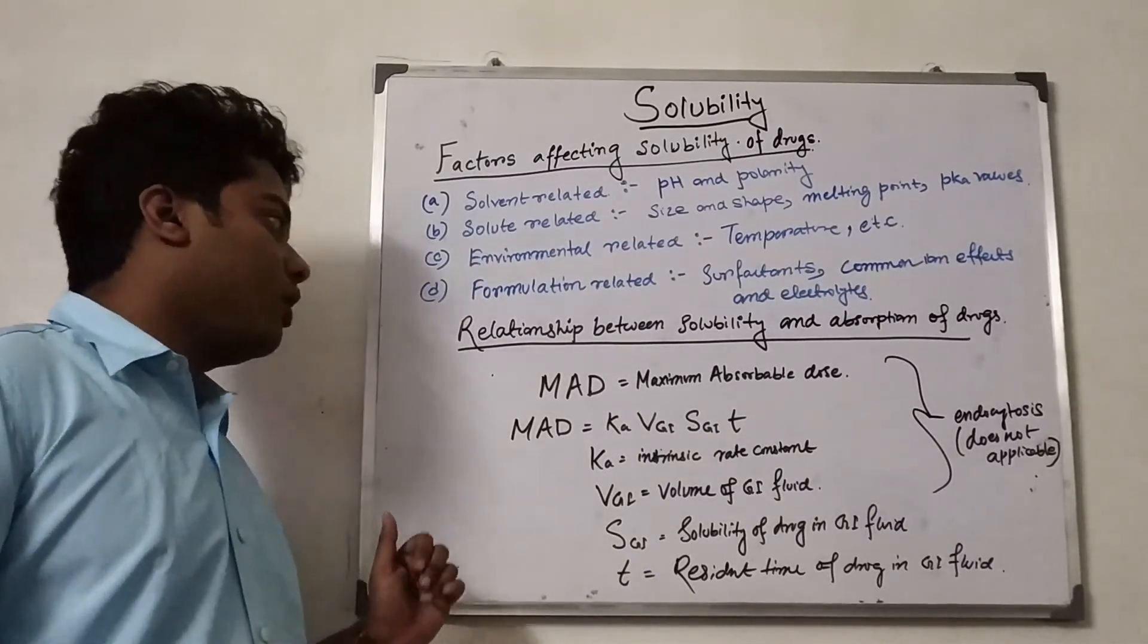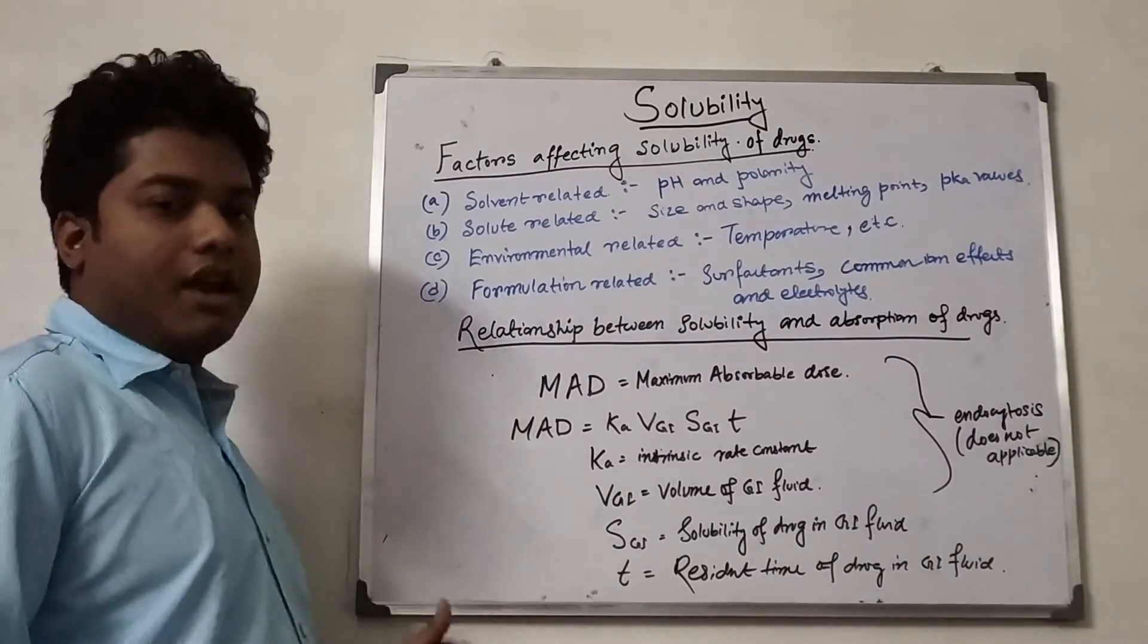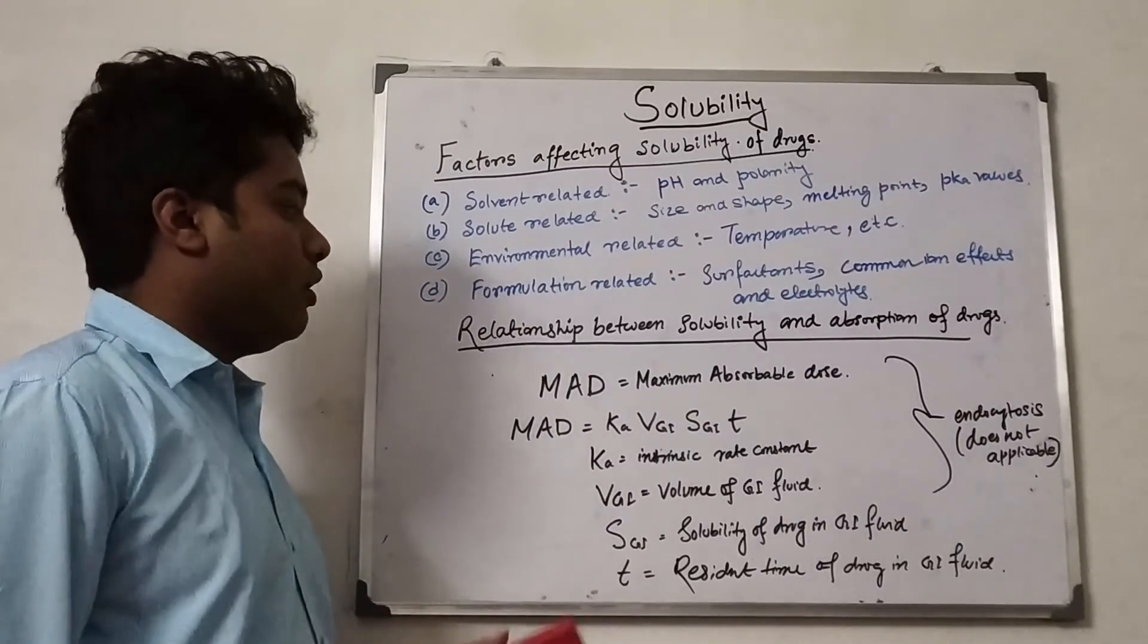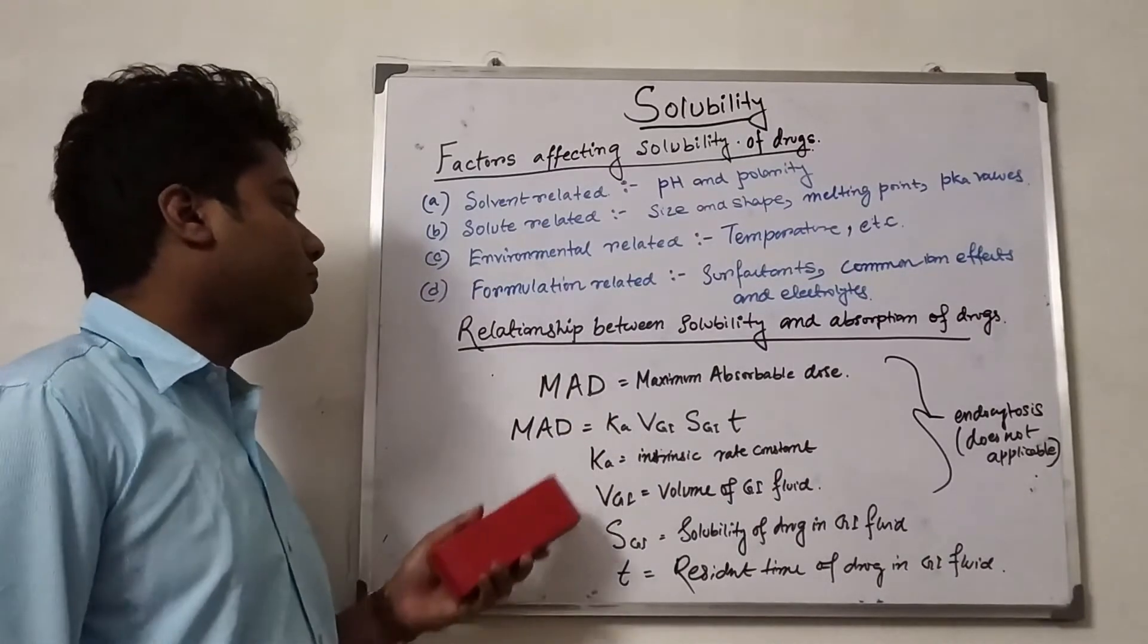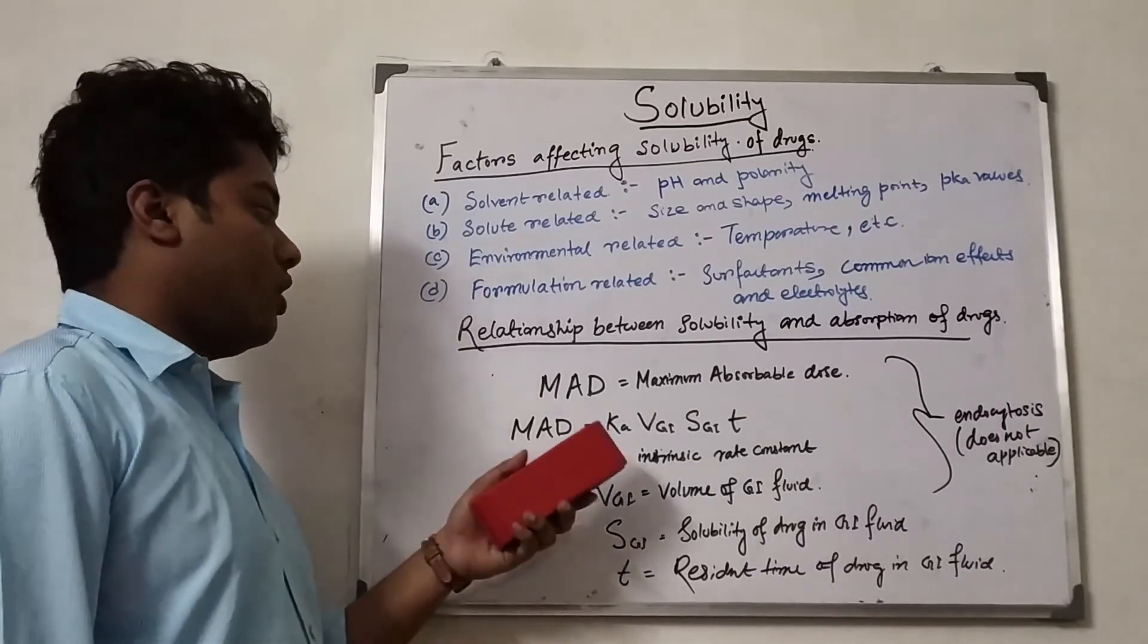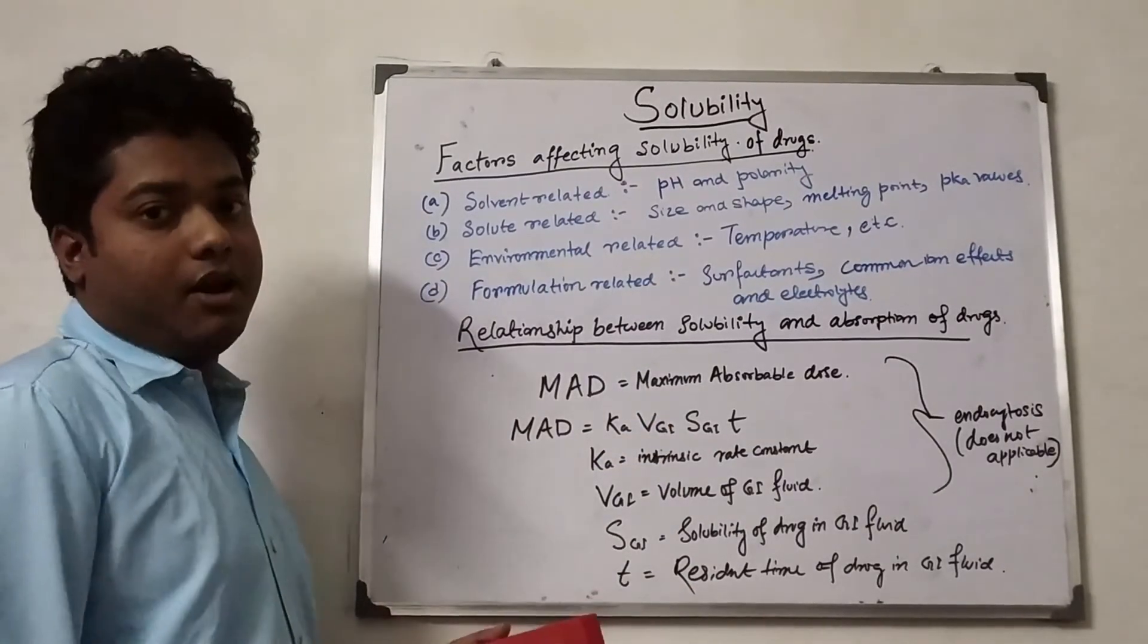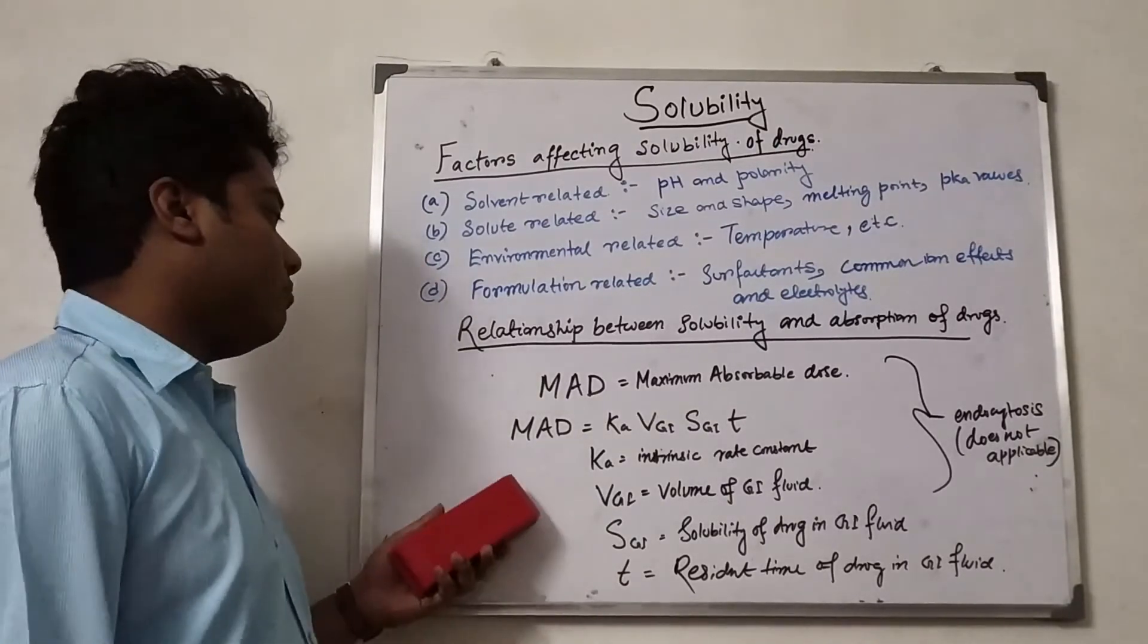This is a general formula for any kinds of absorption of drugs. We have shown here in case of GI, but it can be applicable to every kind of absorption except endocytosis. The drug needs to be generally absorbed through the membranes, so it needs to be properly aqueous soluble to reach the membrane. At the membrane, it needs permeability in the membrane.